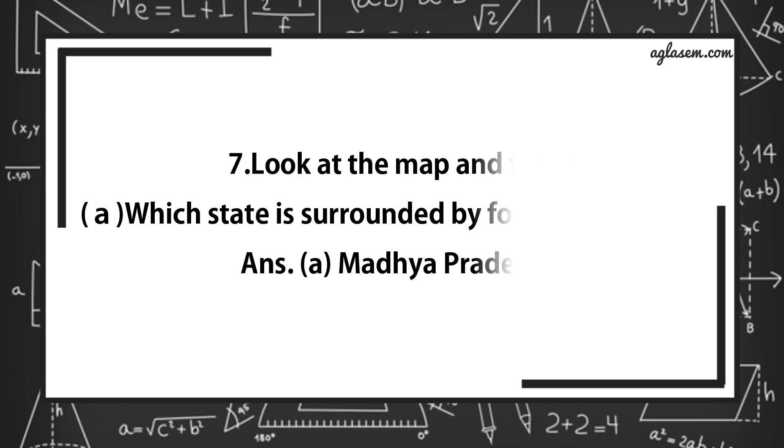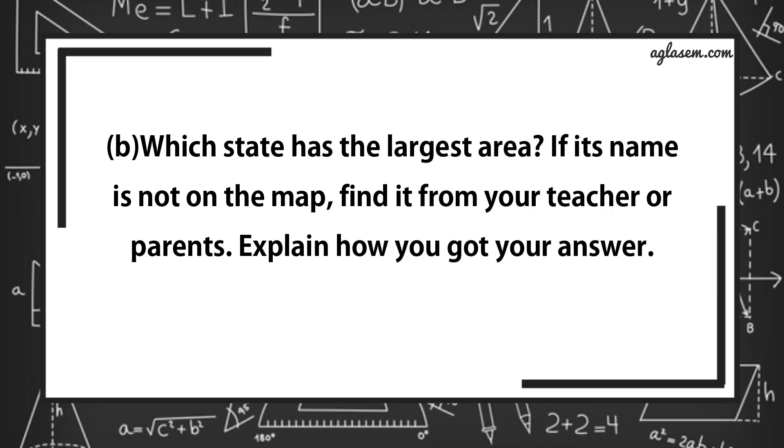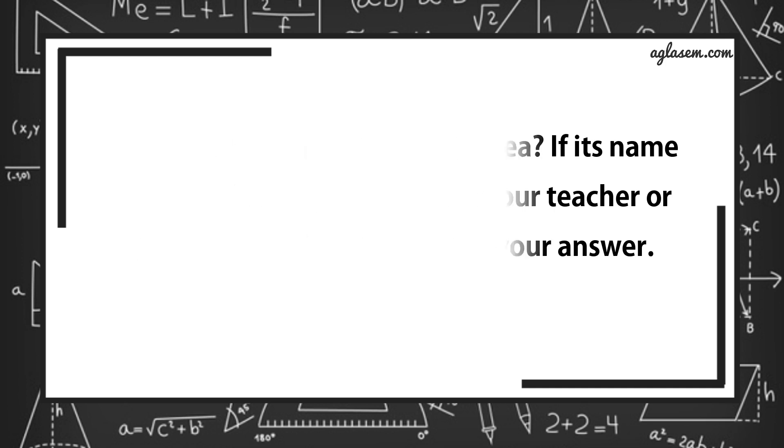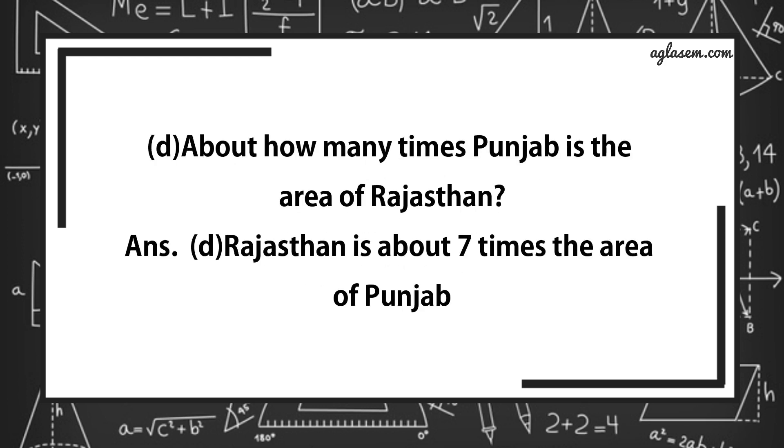Now seventh question says, look at the map and tell. Part 1 says, which state is surrounded by 4 other states? Answer is, Madhya Pradesh. B part says, which state has the largest area? If its name is not on the map, find it from your teacher or parents. Explain how you got your answer. So guys, this you can do it yourself. For the C part says, which state is about 8 times bigger in area than Sikkim? Answer is C, that is Himachal Pradesh. For the D part says, about how many times Punjab is the area of Rajasthan? Answer is, Rajasthan is about 7 times the area of Punjab.